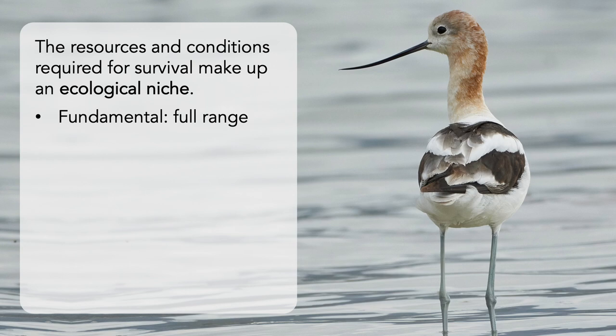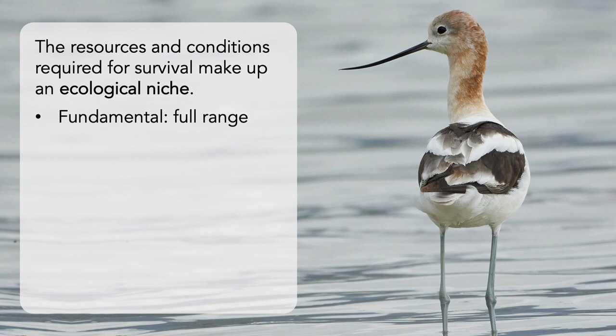However, interactions with other species, like competition, will reduce the resources and physical space that are available, as well as force different resource allocation strategies or behaviors in the focal species. These more restricted conditions describe the realized niche, which is also where a species is best adapted. When we model the potential impacts of climate change, for example, we try to predict how species' geographic ranges might shift based on their ecological niche.